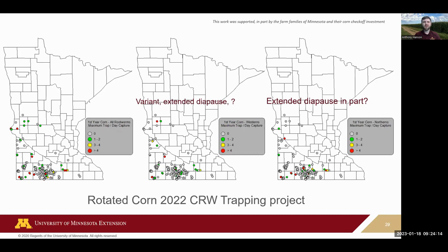Looking at rotated corn — just one year corn, one year soybean — that already seems to help a lot. There are a lot more traps not catching any adults, and not as many red dots showing more than four adults captured per day. Splitting out westerns versus northerns, you have extended diapause in northerns, but there's a question of whether a variant of extended diapause could develop in western corn rootworm. That's something to keep an eye on if there's selection pressure for it.